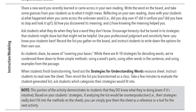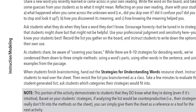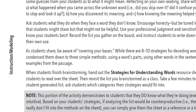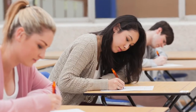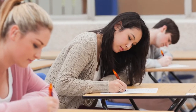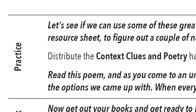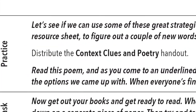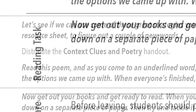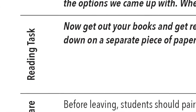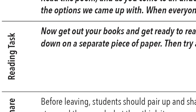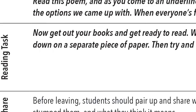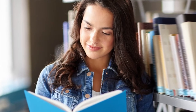The instruction modeling section is where the teaching happens. This section defines terms, explains ideas, and often requires students to complete an included note sheet. In the practice section, students are usually working through an activity or handout to help them further understand the skill you just taught them. The reading task describes what students should be doing while they read their choice books. This is usually a task related to what the students just learned or practiced, but sometimes the task is just to enjoy the act of reading.